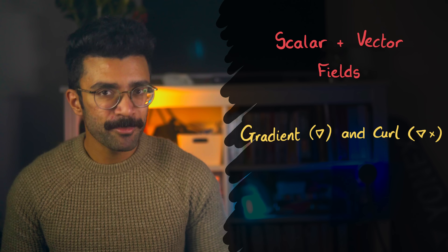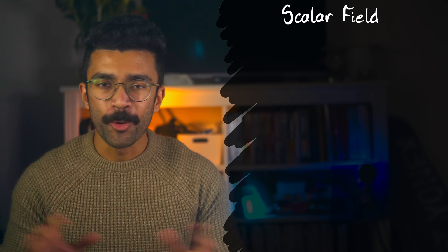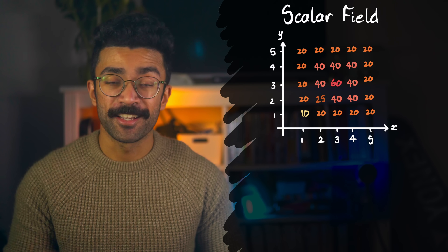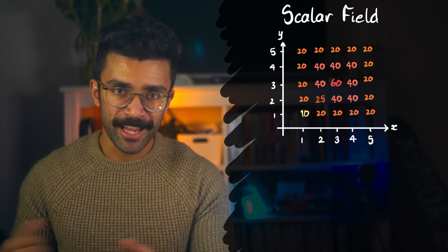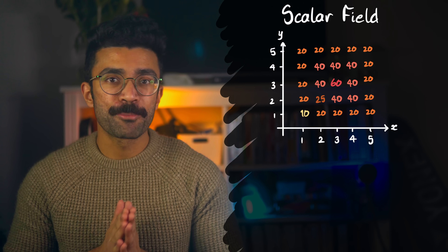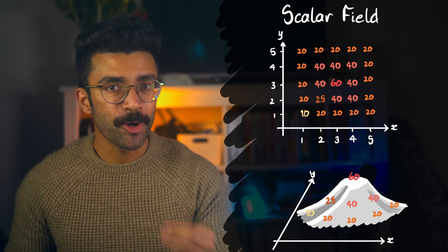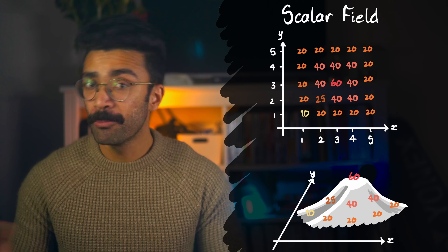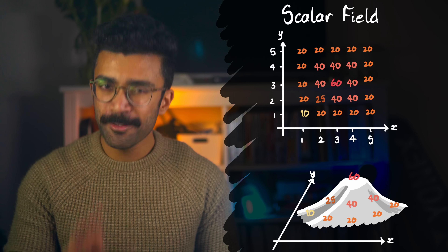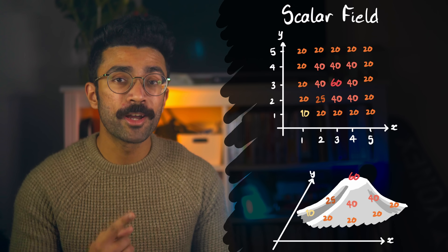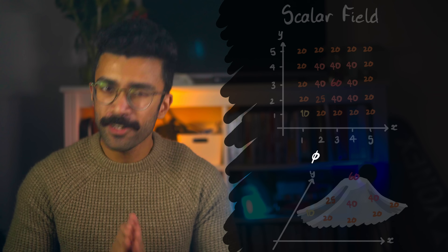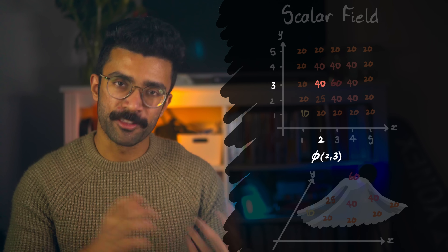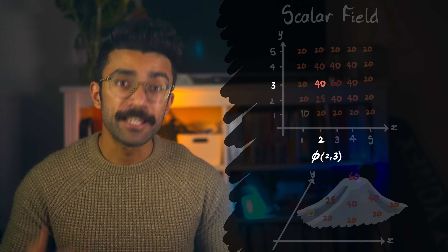We'll start by understanding a mathematical concept called a scalar field. All this is is a region of space that can have some sort of number or scalar assigned to each point — so it's a field of scalars. This can be used for many things. For example, we can represent altitude on a map, so you know how high off the ground each point is, because each point can be assigned a number that shows the height above or below a chosen zero point. We can represent this whole field with one single quantity, say phi, which is a function of the positions x and y. So for example, if we're at x equals 2 and y equals 3, then the value of phi, the scalar field, is 40.